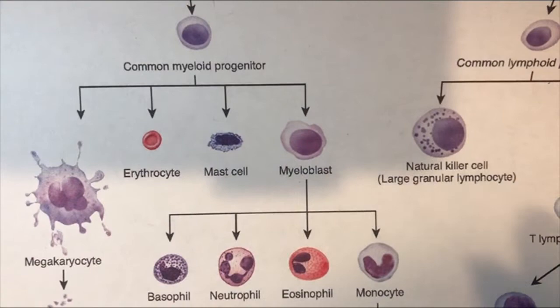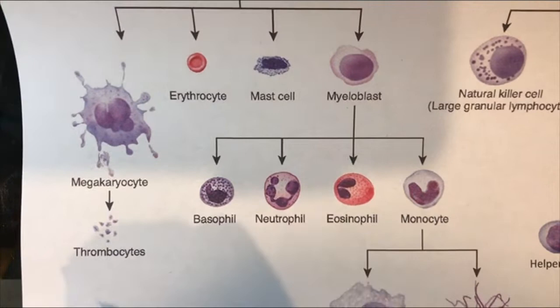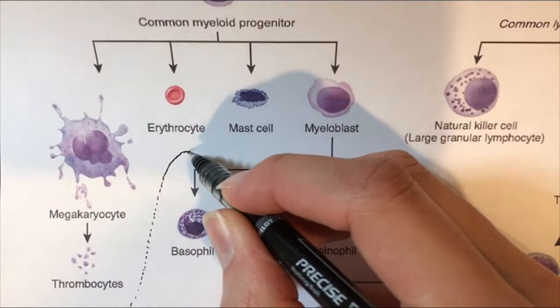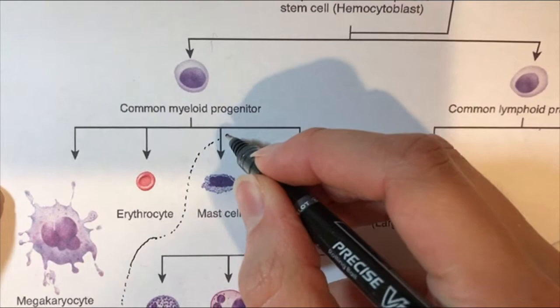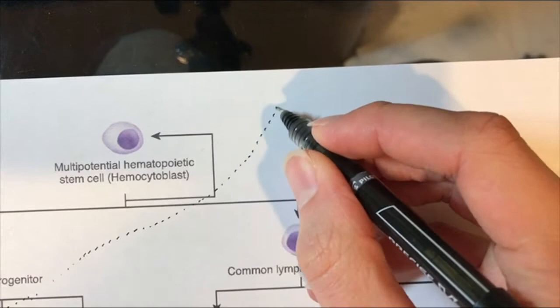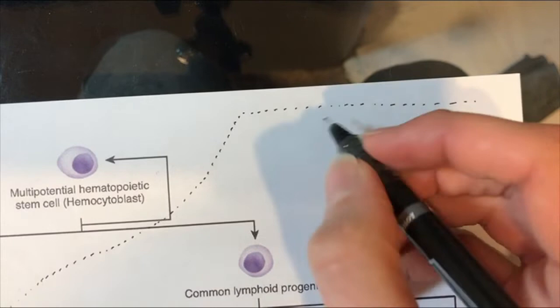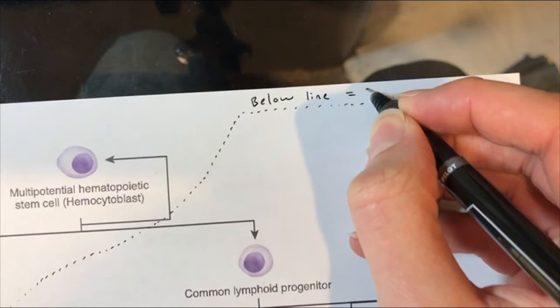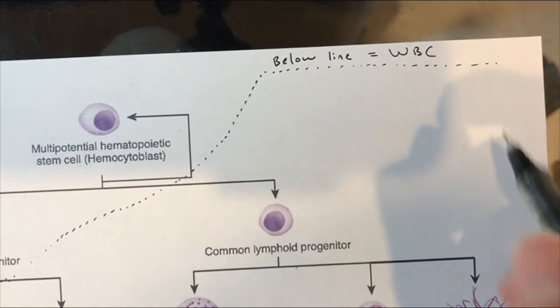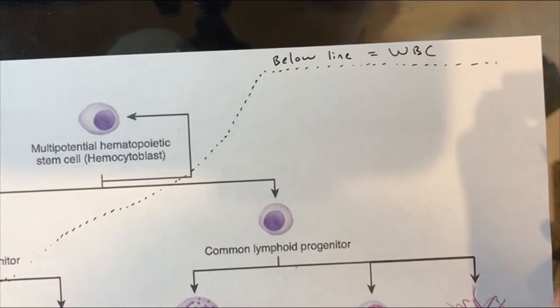I'm going to draw a dotted line to create a border between the white blood cells and the non-white blood cells. Essentially anything above the dotted line is not a white blood cell. If it is below the line, then it is in the white blood cell family. The majority of this worksheet then is going to contain cells from this family, and there are going to be five major cell types that we're going to be talking about.